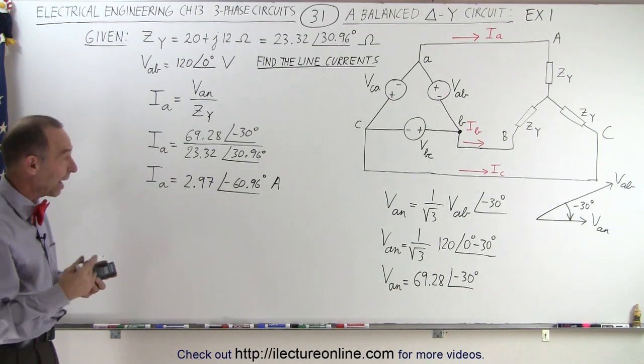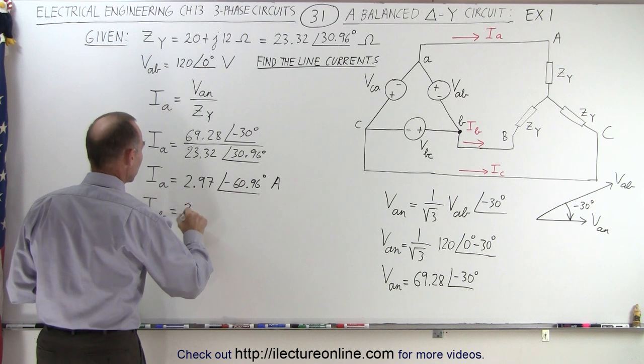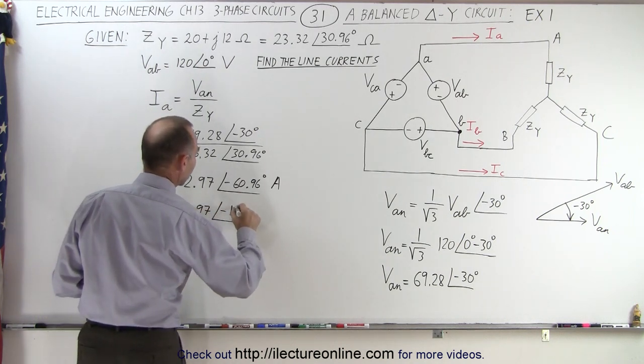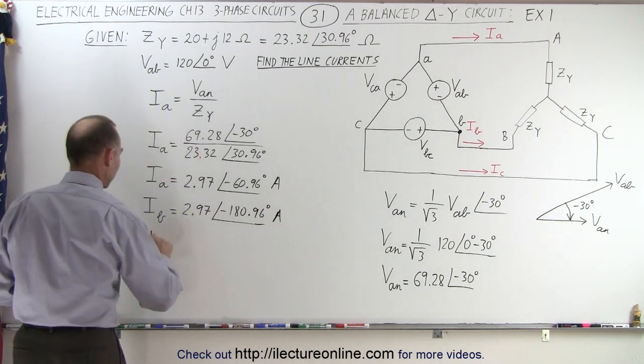If we now want to find I sub B and I sub C, we subtract 120 degrees twice. I sub B would be 2.97 with a phase angle of minus 180.96 degrees. That's in terms of amps.